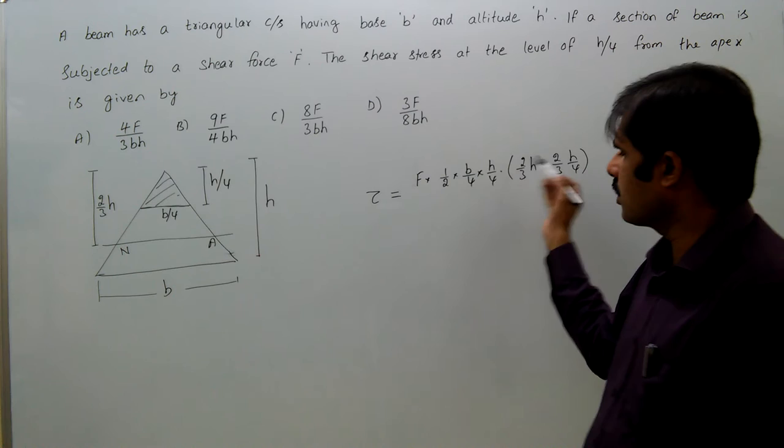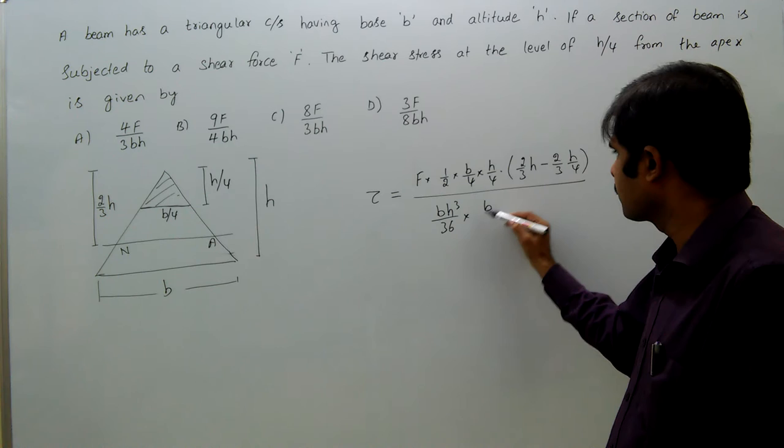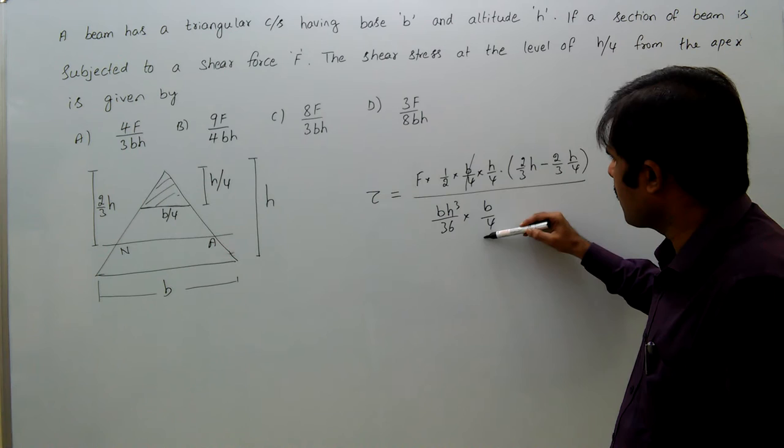This is Q, F into Q divided by I, BH cubed by 36, into width of the section B by 4. So this B by 4 and this B by 4 gets cancelled.